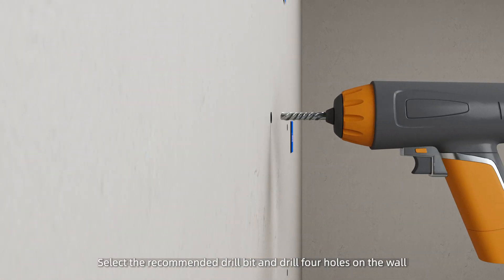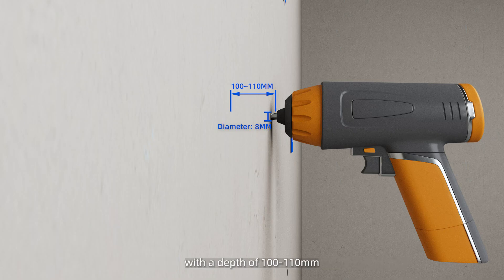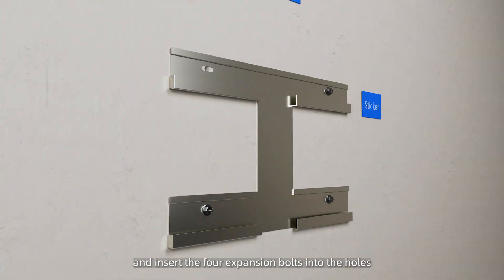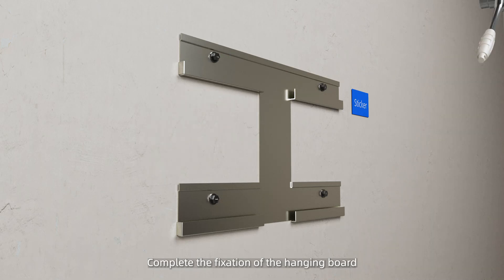Select the recommended drill bit and drill four holes on the wall with a depth of 100 to 110mm. Fix the hanging board to the wall and insert the four expansion bolts into the holes. Complete the fixation of the hanging board.